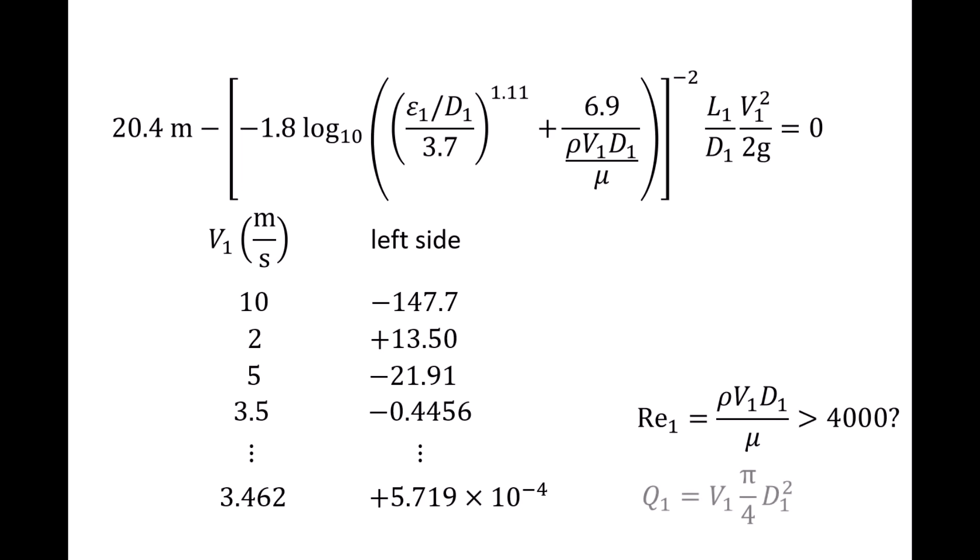Now that we have found a value for v1, we can calculate q1. This process can be repeated to find v2 and v3 by replacing all the 1 subscripts with either 2 or 3.